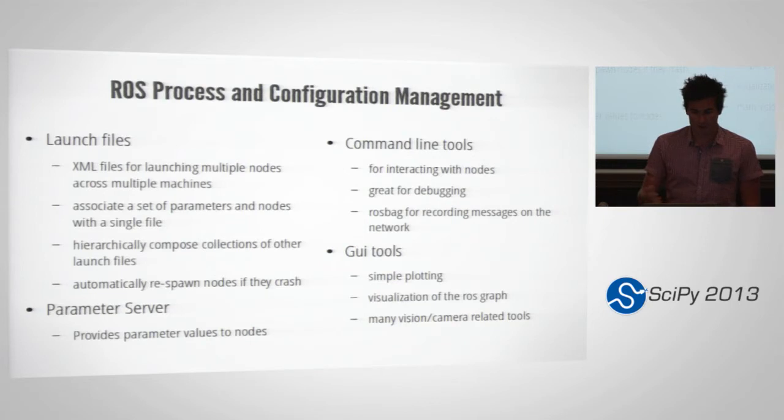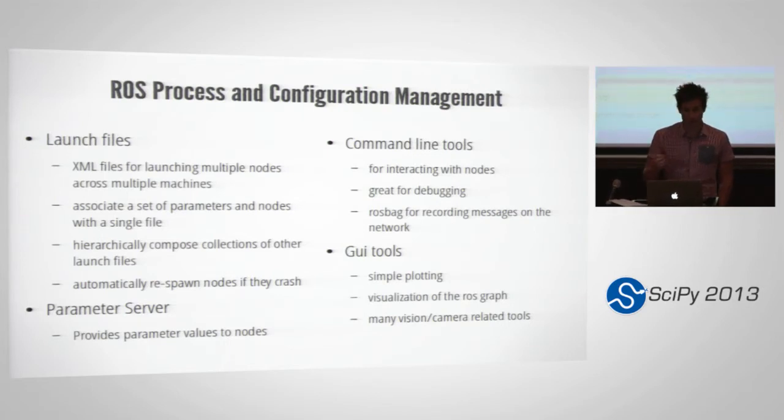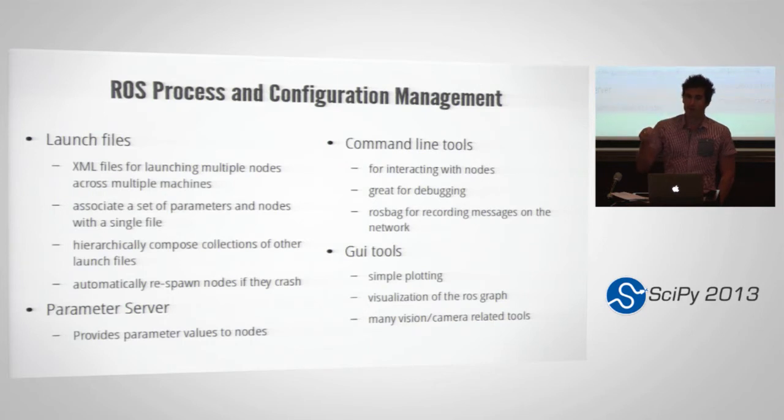The second and third key pillars of ROS are process and configuration management. Process management encompasses launching of ROS nodes on the local machine and on remote machines, and interacting with those nodes on the ROS network using command line tools. I'll demo the tools later, it's easier to just see them in a demo. Configuration management is managed by a thing called the parameter server, which is a service hosted by the special ROS master process, which I haven't mentioned. But it is necessary to be running somewhere on the network to mediate the discovery and communication, the initial communication between nodes. The ROS parameter server provides values to nodes and allows them to get and set them. So it encapsulates the running state of an experiment or the initial state of an experiment.